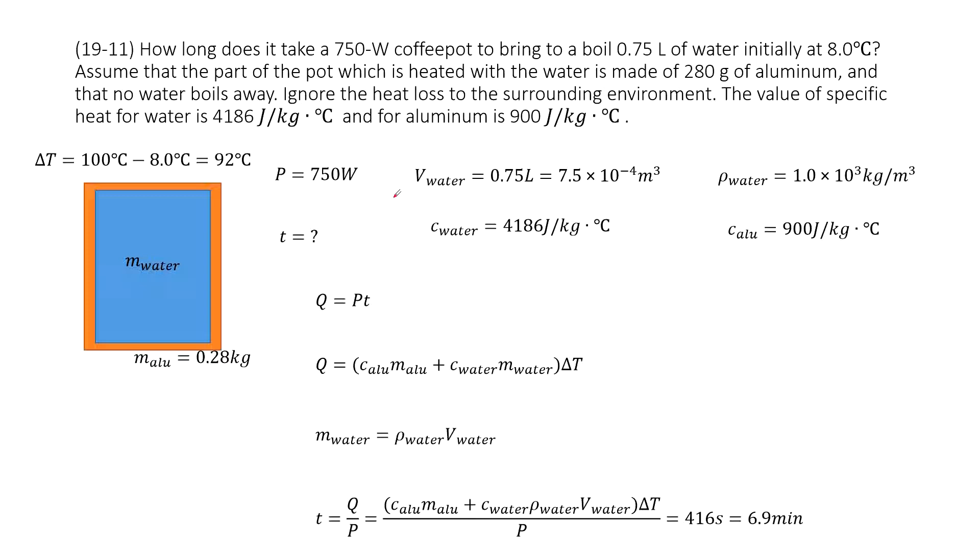So we can see we have a coffee pot. And this coffee pot, the power is given, it is P. And then it is made of aluminum. And the aluminum, the specific heat for aluminum, you can check is given there.